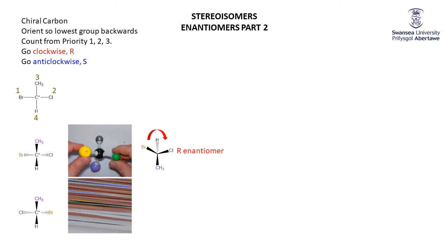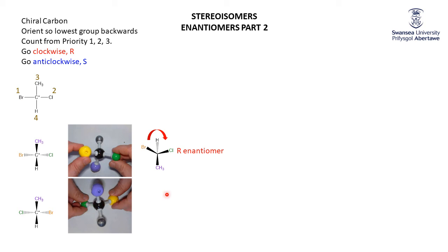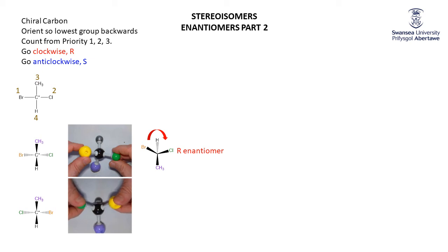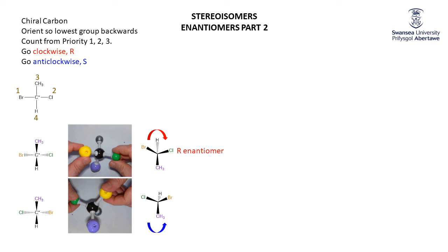Now let's look at the mirror-image enantiomer. The methyl is at the top and hydrogen at the bottom, both coming out toward you; chlorine and bromine go away from you. We rotate to get the hydrogen at the back. Now chlorine is coming out on the left, bromine on the right, methyl on the bottom. Going from bromine to chlorine to methyl — one, two, three — we travel anticlockwise. That gives us the S enantiomer.